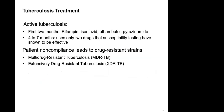Treatment for TB involves antibiotics like rifampin for the first two months, followed by four to seven months using two or three drugs depending on susceptibility testing. Treatment can be up to eight months of antibiotics. Patient non-compliance with taking drugs for the full period is often an issue and is what leads to multi-drug resistant TB.